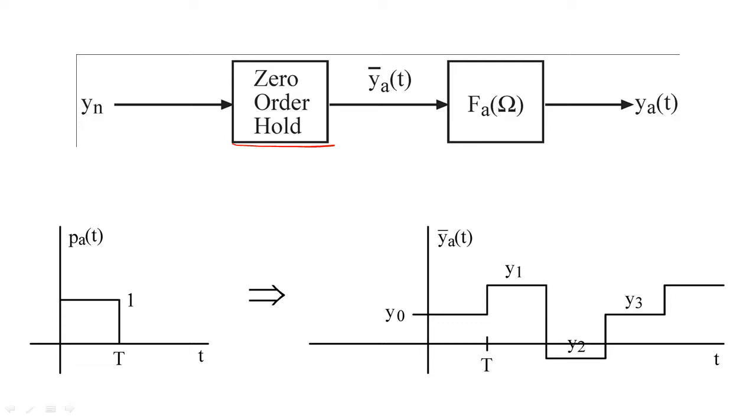This stepwise function would need to be smoothed by a filter f sub a, to create y sub a of t. To figure out what this smoothing filter needs to be, let's take a closer look at p sub a.